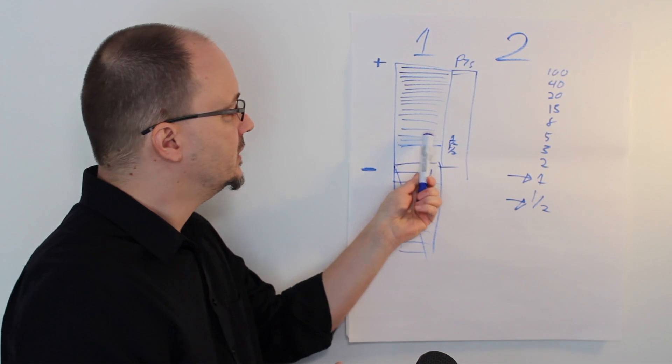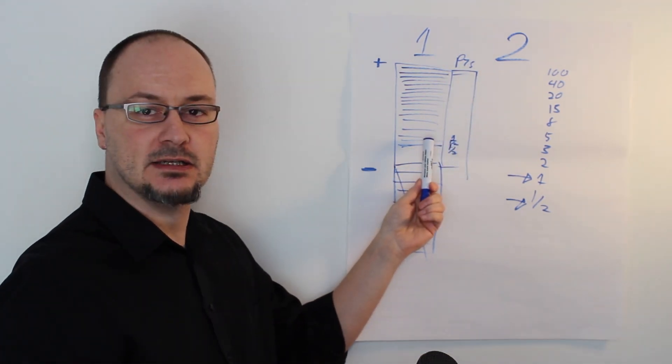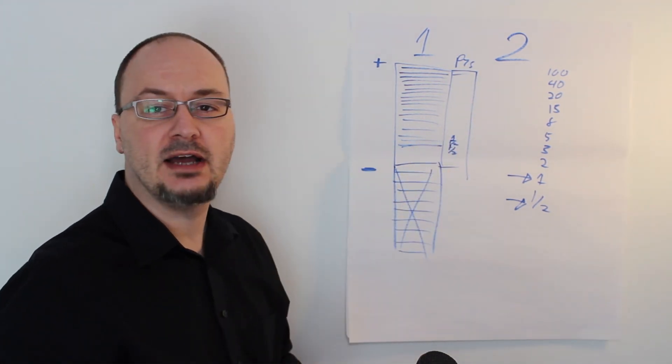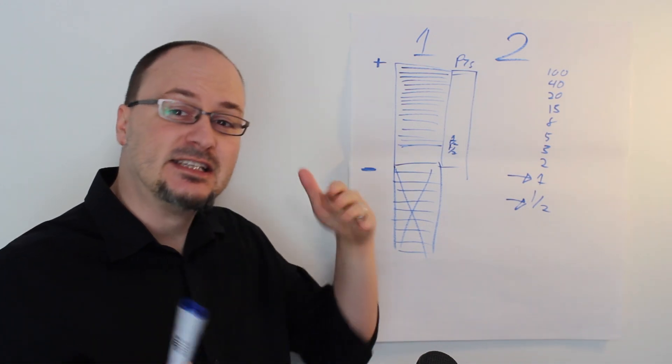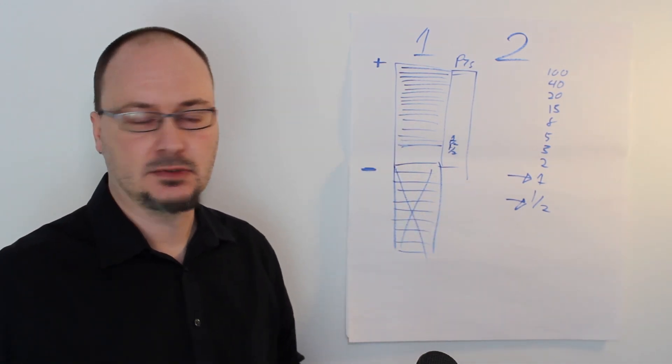So you move to one and then you keep moving like that. And every time in step two, what you do is every time you encounter a new item, you ask the question, is the next one at least twice as big?